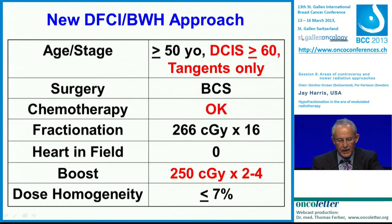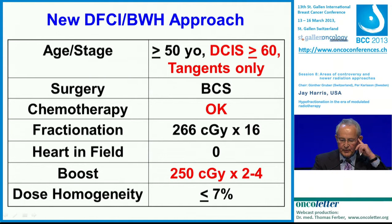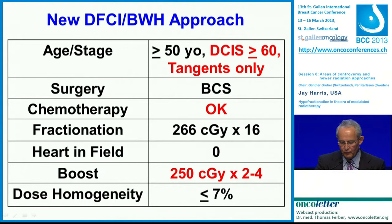Based on the START-B trial, we've enlarged our use of hypo-fractionation to where patients are getting tangents only. They can have minimal nodal involvement. We're also including patients with DCIS treated with breast-conserving therapy over the age of 60. We're now allowing adjuvant chemotherapy. We're doing Canadian fractionation, totally agree with excluding the heart from the field, and we're allowing boost irradiation — either 250 centigray for two or four fractions — and completely agree with the use of dose homogeneity within 7%.